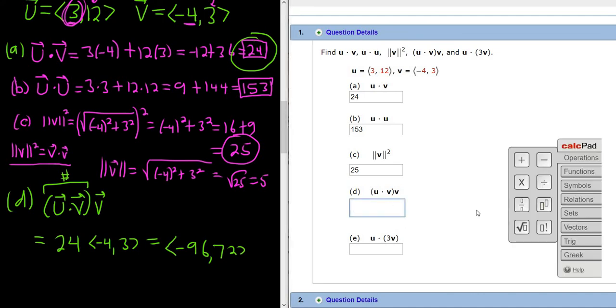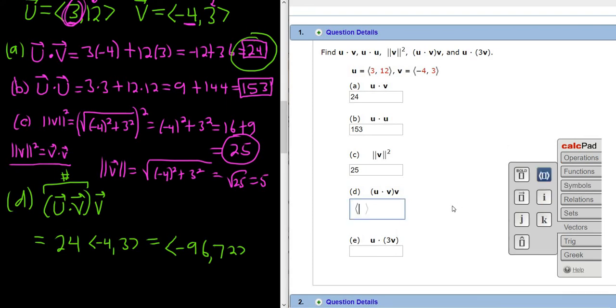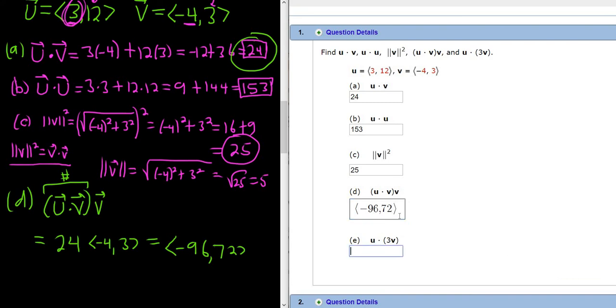I'm going to click on the vector button here, vectors. And go over here and click the vector bracket. And type in negative 96, comma, 72. And I'm going to take my mouse and click on part e.